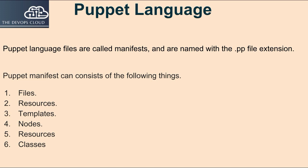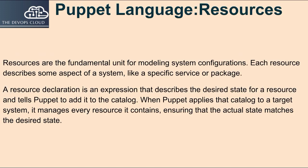A Puppet manifest can consist of the following things: Puppet files, resources, templates, nodes, and classes.